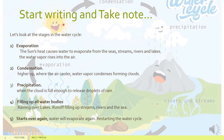As it turns from vapour to liquid and solid in the sky, it's within the process of condensation. Higher up, where the air gets cooler, the evaporated water condenses, forming clouds.